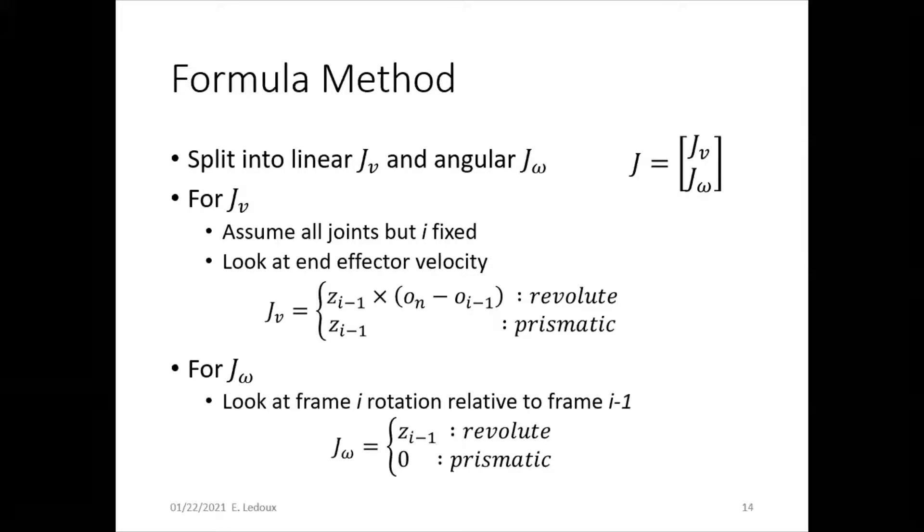For revolute joints, we have a cross product, and for prismatic joints, we just have the z-axis for linear. And then for angular, prismatic is zero, revolute is the z-axis. More on these methods in a later video.